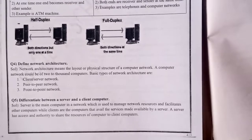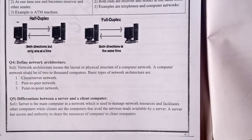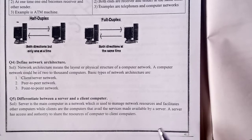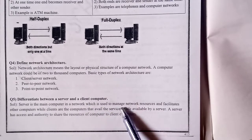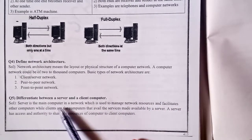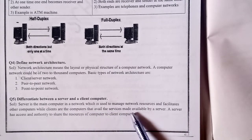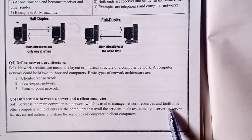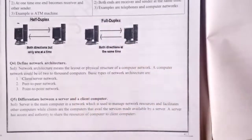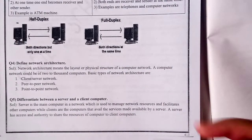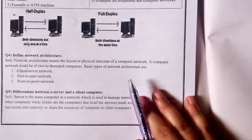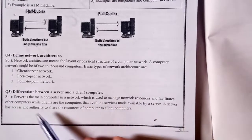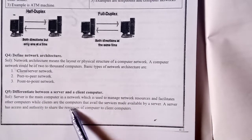Next: Differentiate between a server and a client. It is a good thing to write this. A server is the main computer in a network which is used to manage network resources and facilitate other computers. Clients are the computers that avail the resources and services made available by a server. A server has access and authority to share the resources of the computer to client computers.